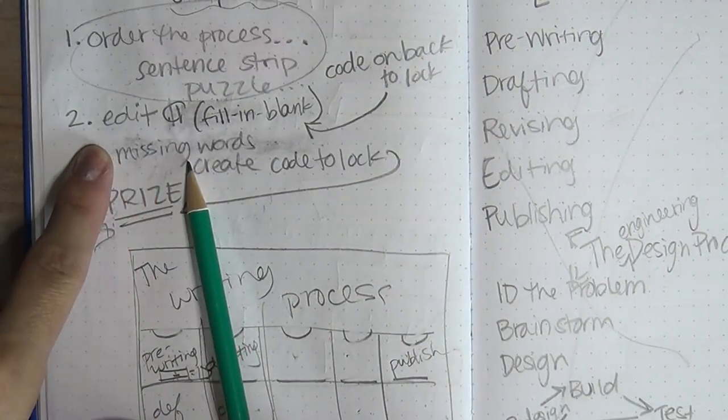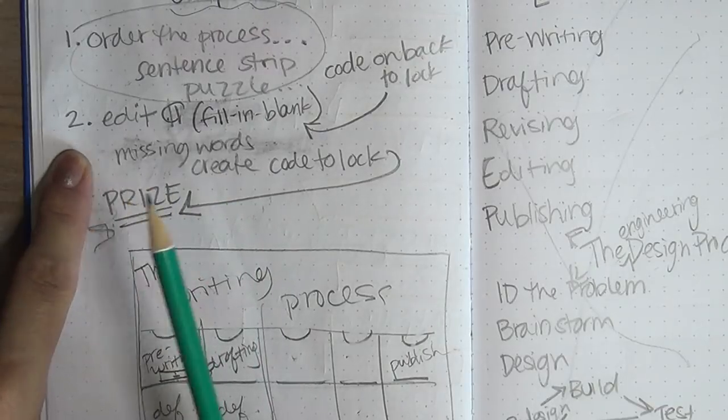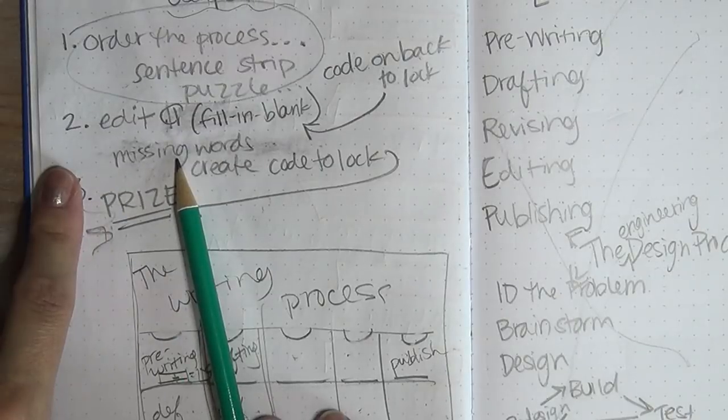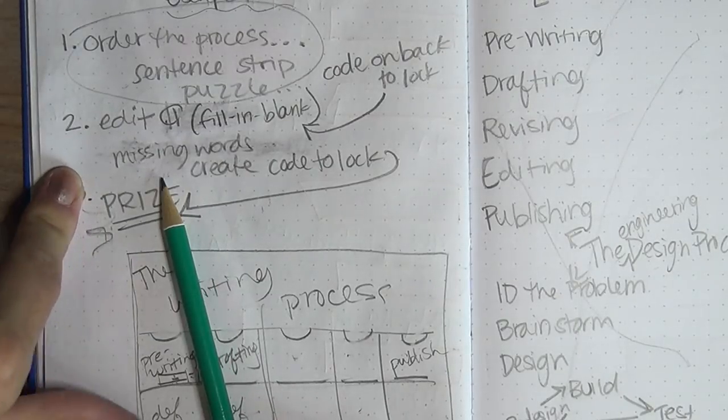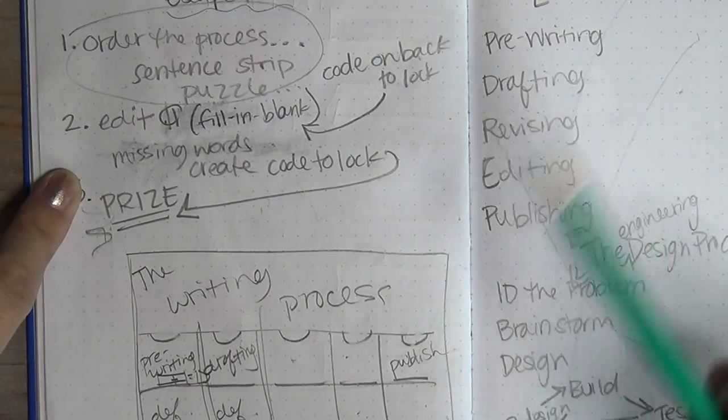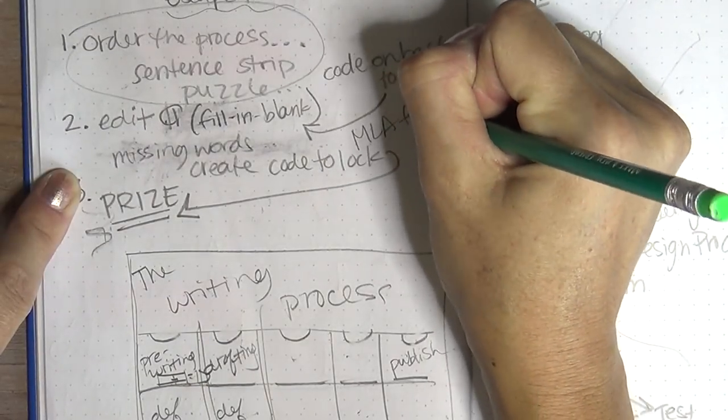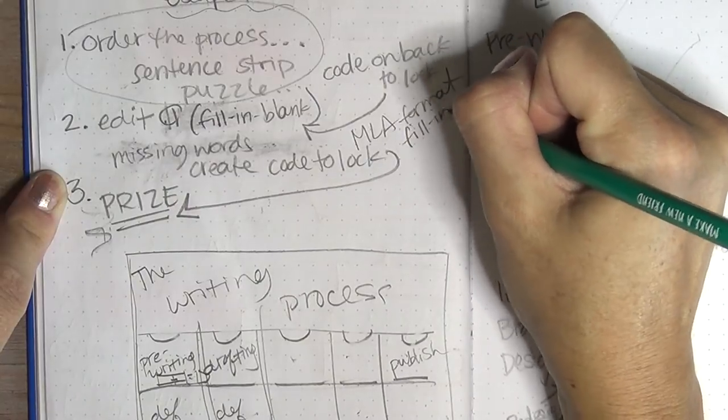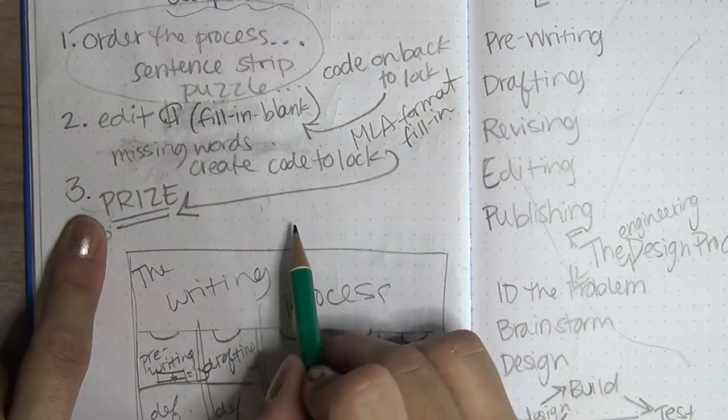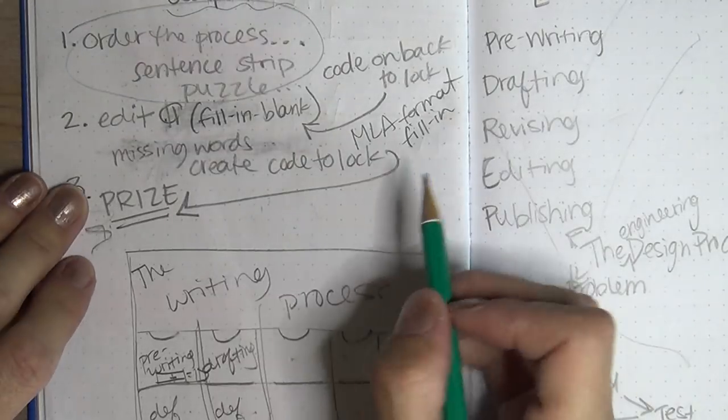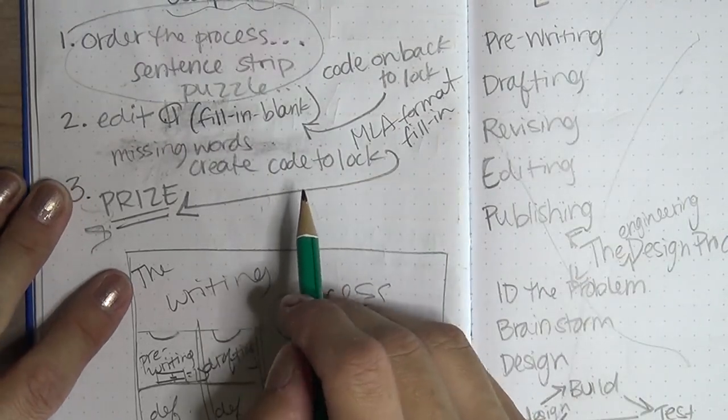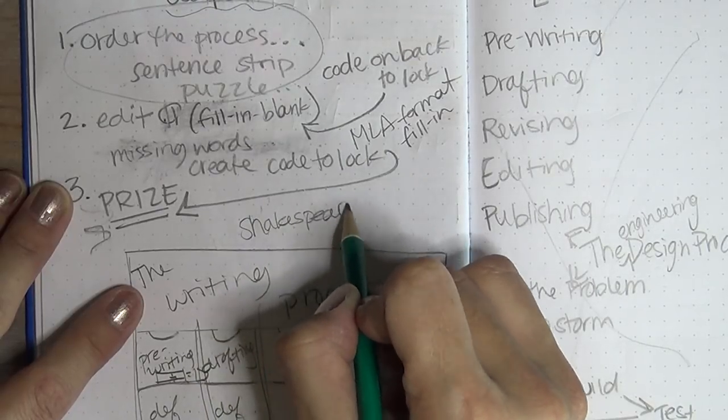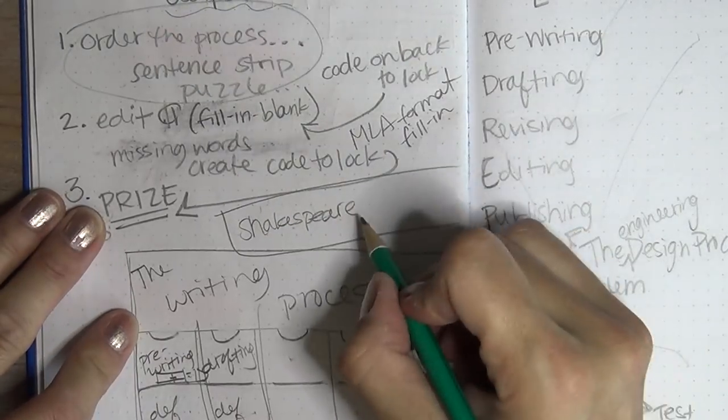This will become a five digit code for a lock. That lock will then unlock the next puzzle. The next puzzle is going to be something that I'm actually going to make later today, a paragraph where they have to fill in the blank. I'm not sure if it's going to be editing a paragraph and filling in missing words or if it might be like an MLA format fill in the blank. We'll see.